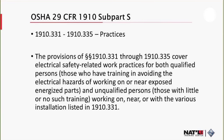Subpart S of OSHA 29 CFR 1910 addresses electrical safety requirements that are necessary for the practical safeguarding of employees in their workplaces. Sections 1910.331 through 1910.335 are regulations associated with safety-related work practices, covering electrical safety for both qualified persons — those who have training in avoiding the electrical hazards of working on or near exposed energized parts — and unqualified persons, those with little or no such training, working on, near, or with the various installations listed in 1910.331.